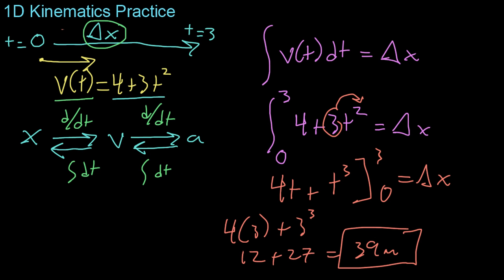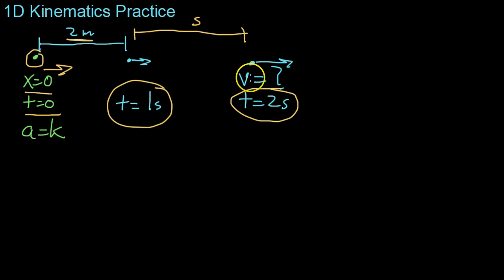Alright, so the final problem we're going to be looking at in this video sort of requires an integration of many of the equations we've looked at already. Basically you start with a particle at the origin, so x equals 0 at time t equals 0, and it's accelerating constantly this way. So it starts off with a small acceleration and increases gradually at the same rate. So at time 1 second it's gone a total of 2 meters. And then one second later at time t equals 2 seconds, it's gone some other distance, let's call that s. But we're not interested in s. What we want to know is at this time t equals 2 seconds, what is its velocity? In other words, how fast is it going?